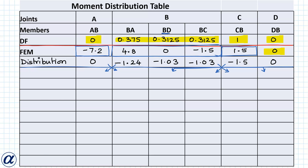Carry-over moments with factor 1/2: from AB to BA and BA to AB giving −0.620; from BD to DB and DB to BD; from BC to CB and CB to BC, giving −0.515 at relevant ends; −0.75 and −0.515 at the corresponding ends.